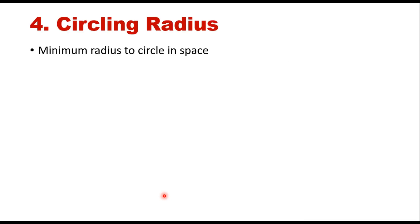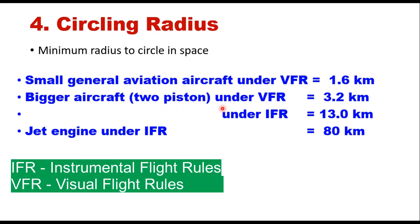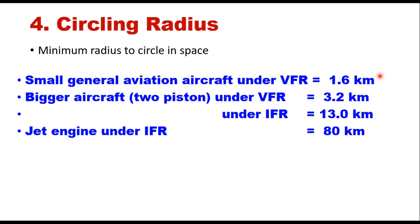Next is the circling radius. The circling radius of an aircraft is the minimum radius with which an aircraft can make a complete round in space. The difference between turning radius and circling radius should be understood: turning radius is when the aircraft makes a turn on the ground, whereas circling radius is when it takes a turn in the air. It depends upon the size and engine of the aircraft. For small general aviation aircraft under VFR conditions it is 1.6 km; for larger twin-piston aircraft under VFR conditions, 3.2 km; under IFR conditions it can be 13 km; and for jet engine aircraft under IFR conditions it can be up to 80 km. This distance is important for planning the spacing between two airports and the height of structures within the airport boundary in case of a failed takeoff.